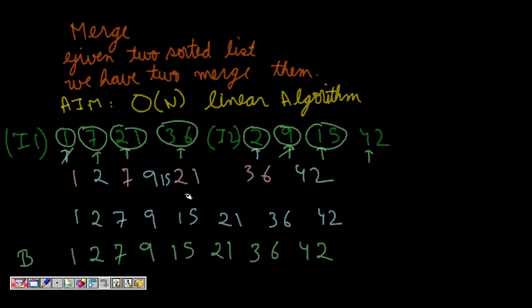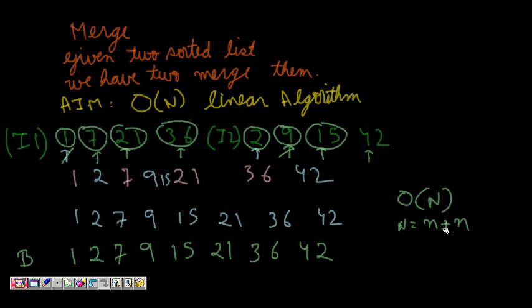For my good luck I did it on the first try — we could achieve a linear algorithm where the total time is O(n + m), where n is the length of the first array and m is the length of the second array.